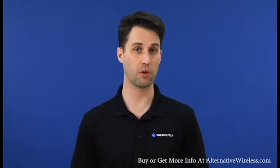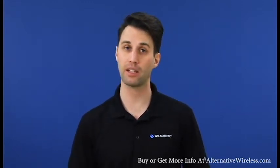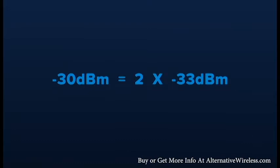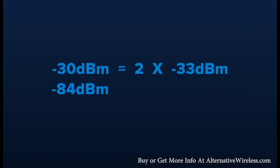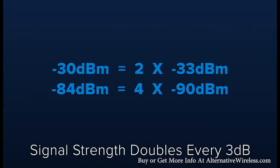Keep in mind that because dB and dBm are logarithmic, the normal ways we are used to thinking about magnitudes no longer apply. For example, a negative 30 dBm signal is twice as powerful as a negative 33 dBm signal, and a negative 84 dBm signal is four times as powerful as a negative 90 dBm signal. The signal strength doubles every 3 dB.